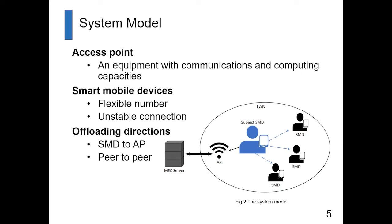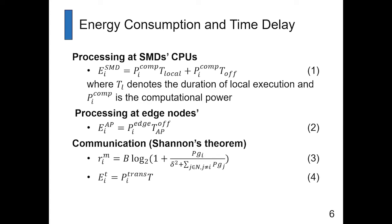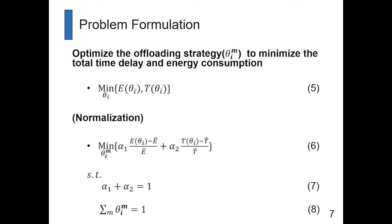The important thing in our research is to let the SMD find the best way to offload. We use formulations 1 through 4 to evaluate the network by computing energy consumption and time delay. Formulations 1 and 2 evaluate energy consumption by processing at SMD CPU or edge nodes. We use Shannon's theorem to compute time delay and evaluate network communication. We use those results to optimize the offloading strategy theta.